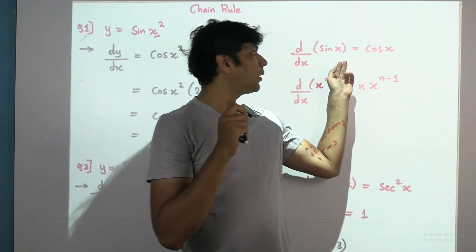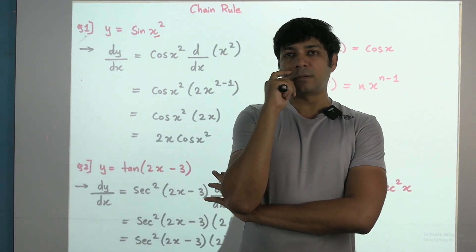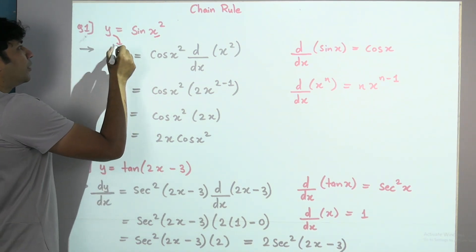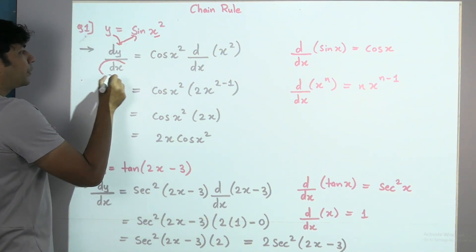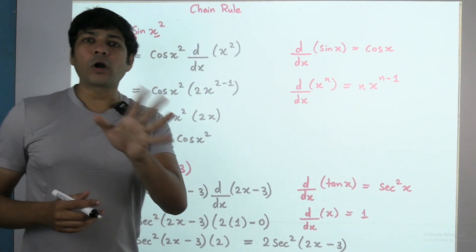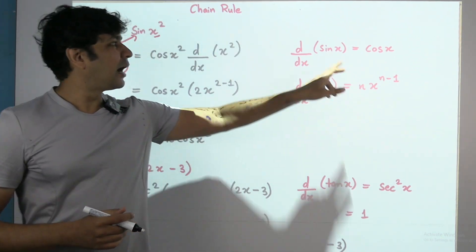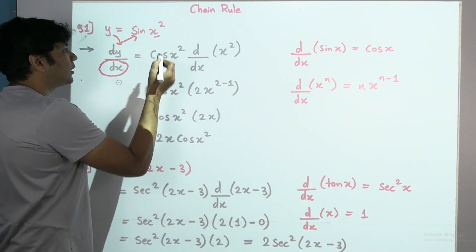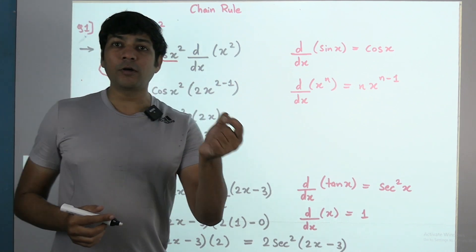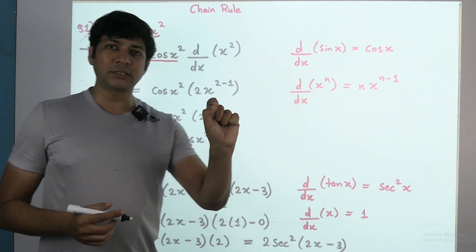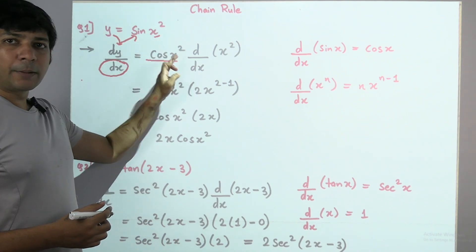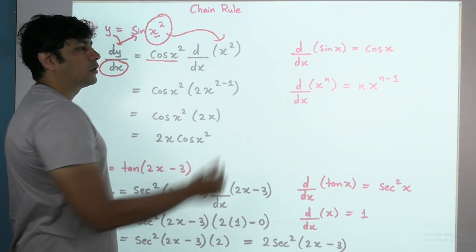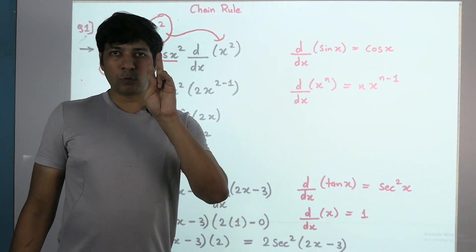Anything apart from normal formula implementation will activate the chain rule concept. After sin, whatever comes — do not bother, just write it as is. Sin(x²) differentiated is cos(x²), meaning sin of whatever comes next, the differentiation is cos of whatever comes from it — into differentiation of the unique value. This is a two-level chain problem.